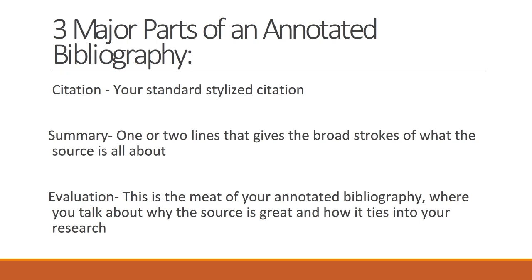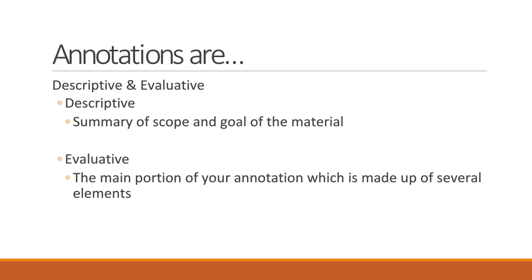There are three major parts of an annotated bibliography. These elements include citations — your standard stylized citation, most likely MLA or APA for undergraduate work — and then the annotations themselves. Your annotations will include a summary of one to two lines that gives the broad strokes of what your cited source is all about. And in the meat of your annotations are the evaluative elements, where you talk about specific elements of the selected sources and how each one ties to your research endeavor. Each annotation is both descriptive and evaluative: descriptive in that they provide a summary of each source, and evaluative in that they explore and explain different aspects of the source's content.